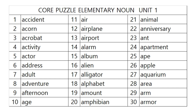6. Address. Address. 7. Adult. Adult. 8. Adventure. Adventure. 9. Afternoon. Afternoon. 10. Age. 11. Air. Air. 12. Airplane. Airplane.